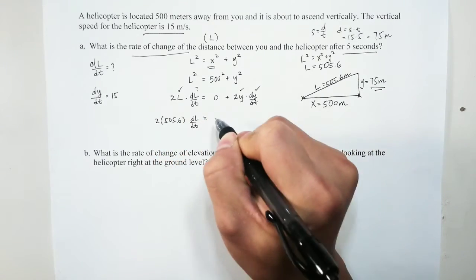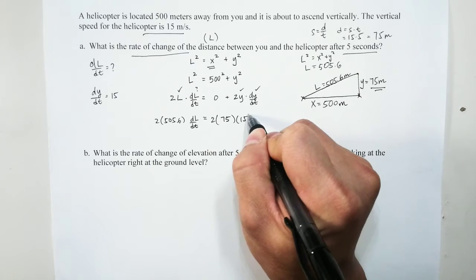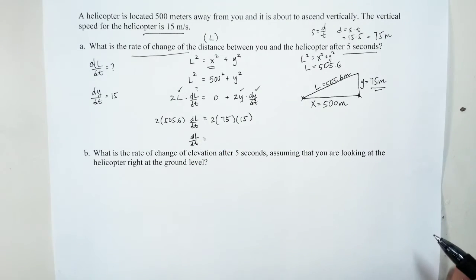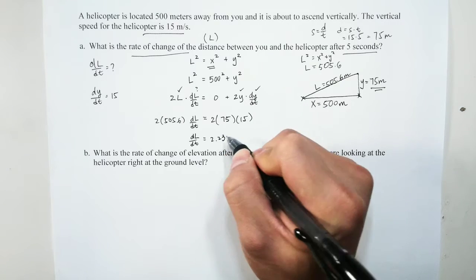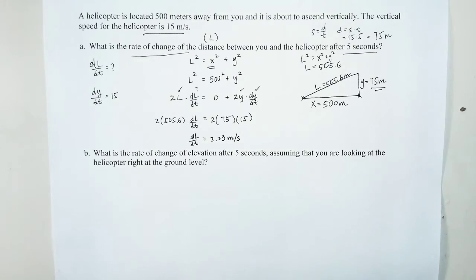The zero term drops out. Plugging in: 2l · dl/dt = 2y · dy/dt, with y = 75 and dy/dt = 15. Calculating dl/dt gives approximately 2.225, which rounds to 2.23 meters per second. That is the rate of change of the distance between you and the helicopter at five seconds after takeoff.